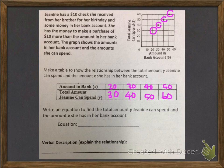So we filled out our table. Now we can write an equation to find the total amount y Janine can spend and the amount x she has in her bank account. So if we look at our table, the rule is always that we are adding 10 to the input. We are always adding 10 to the x value. So our rule is x plus 10, which means our equation is y equals x plus 10.